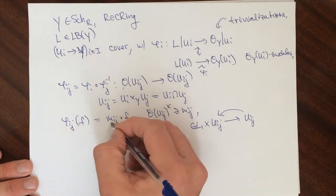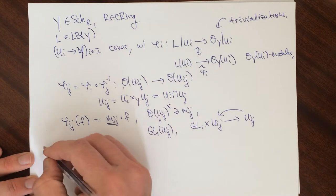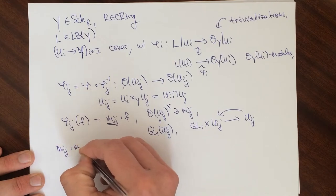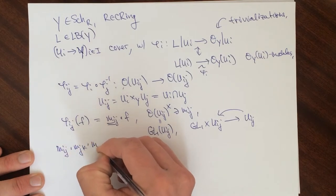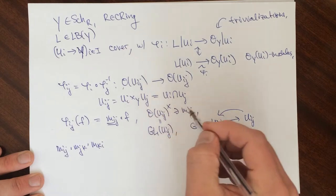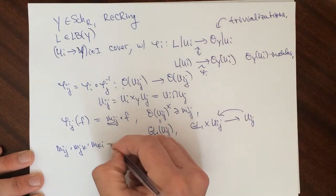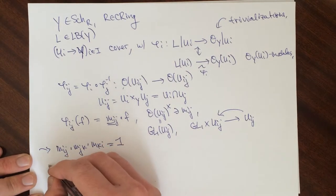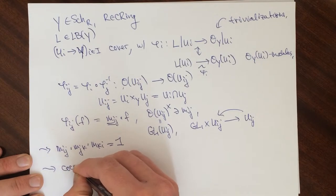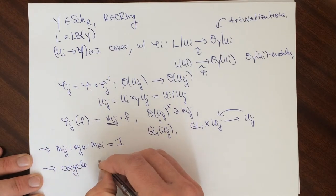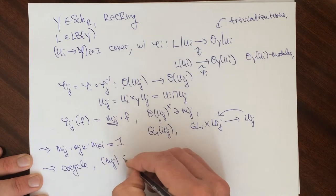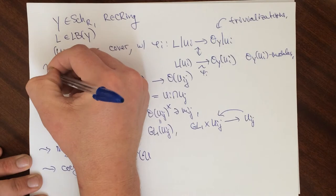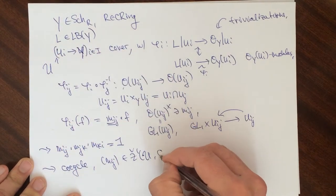So what do we have? We have this M_{IJ}. It turns out that M_{IJ} times M_{JK} times M_{KI}, as an element of O(U_{IJK}) — the triple intersection — is equal to one. This is a cocycle; this gives a cocycle. So the collection {M_{IJ}} is an element of Z¹ in Čech cohomology with respect to this cover U of GL1.